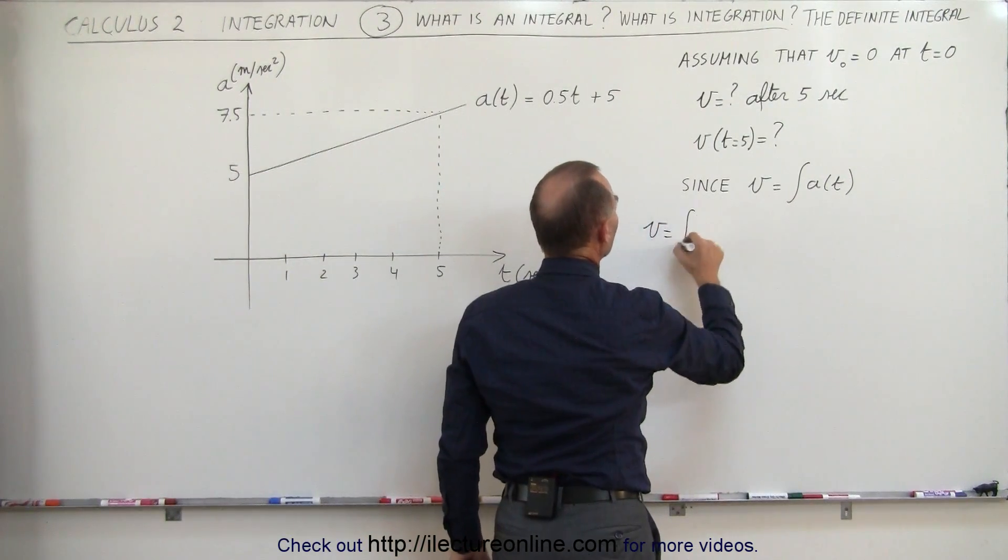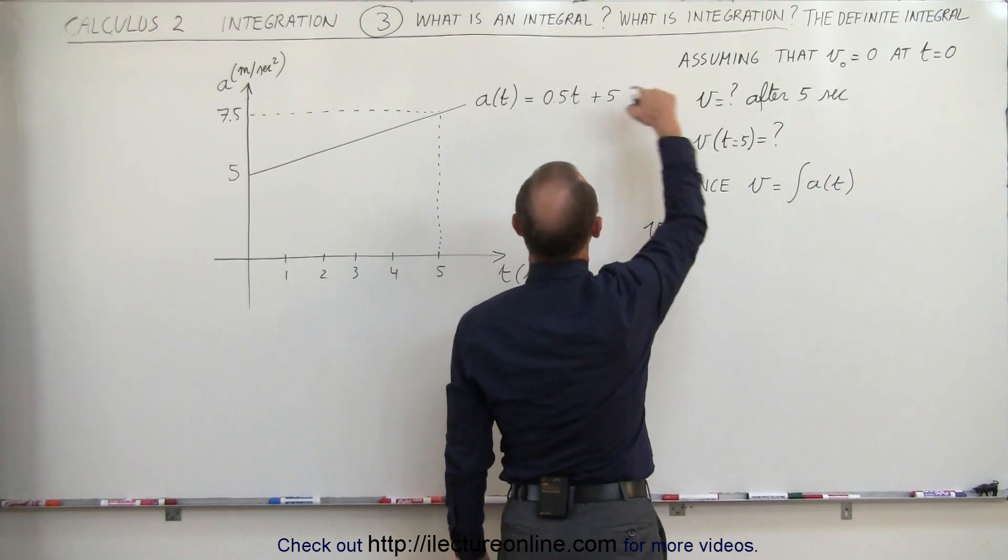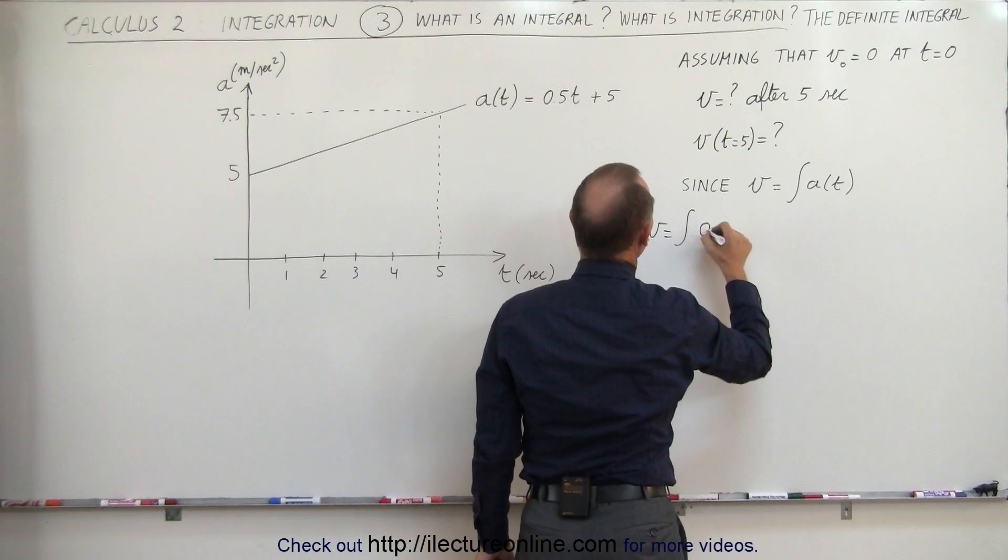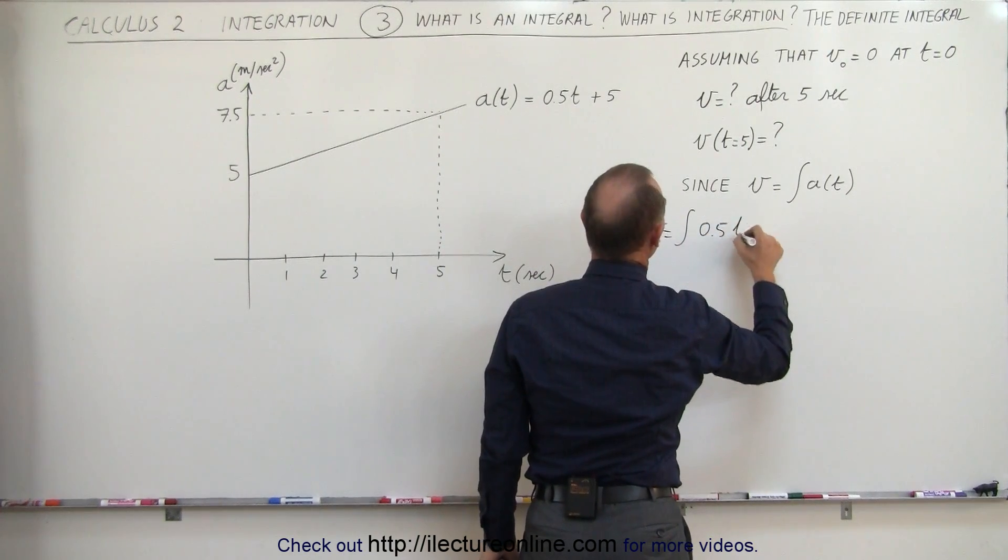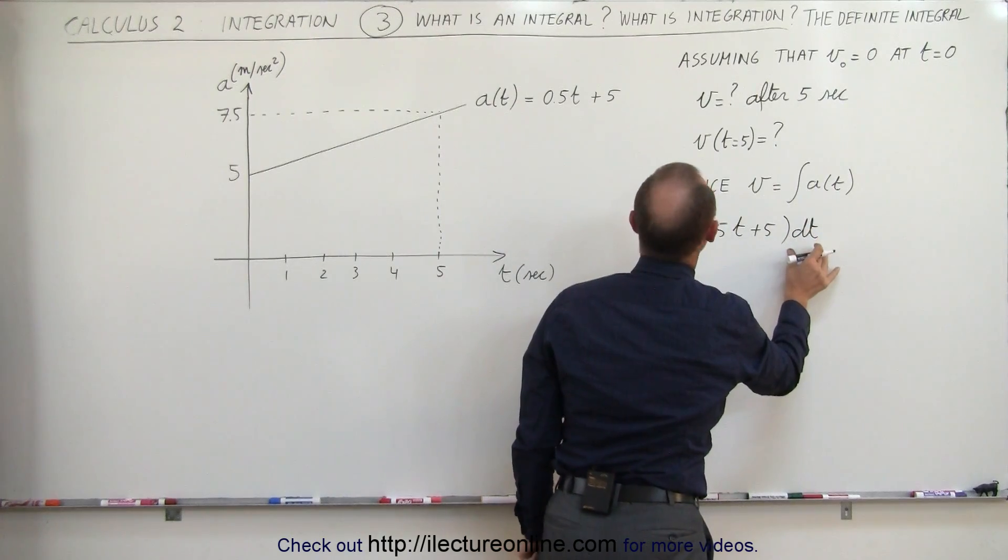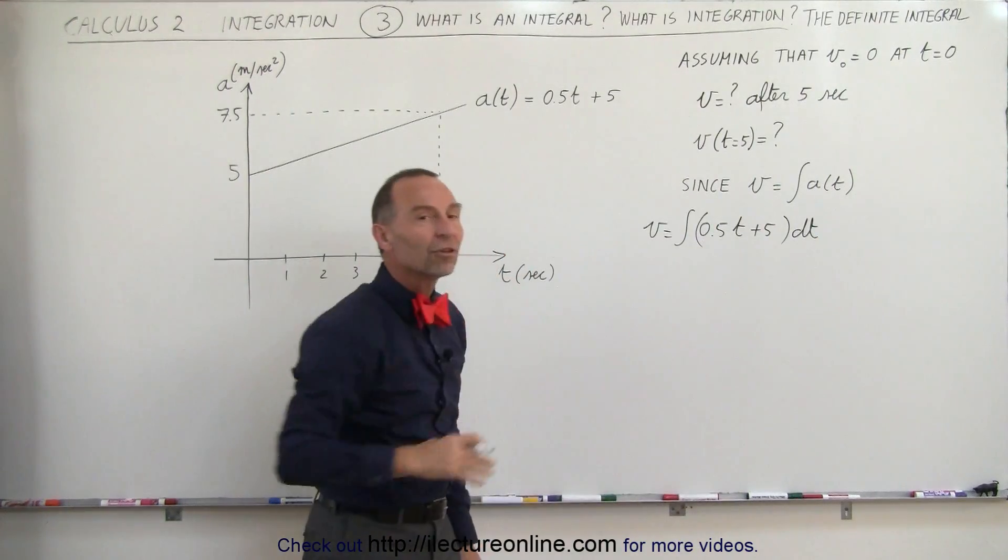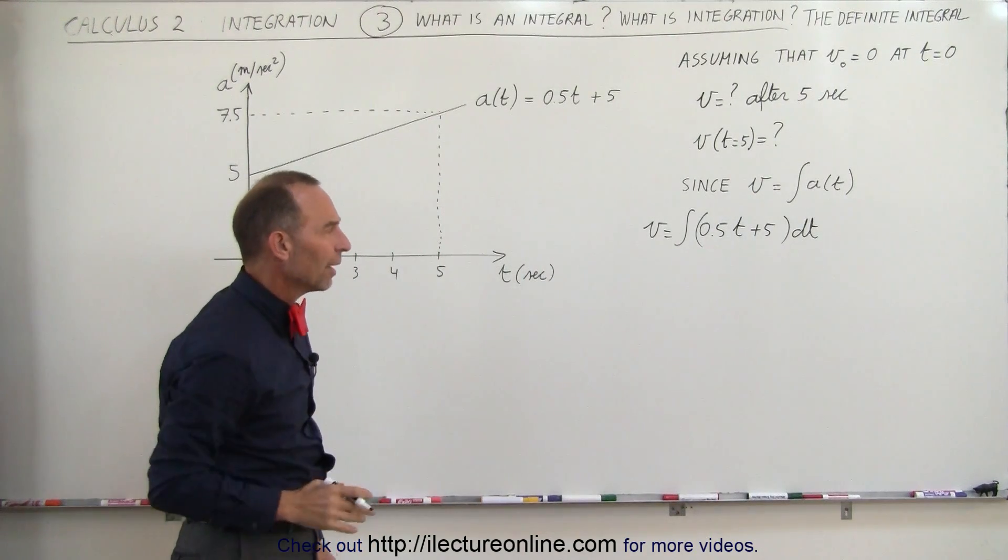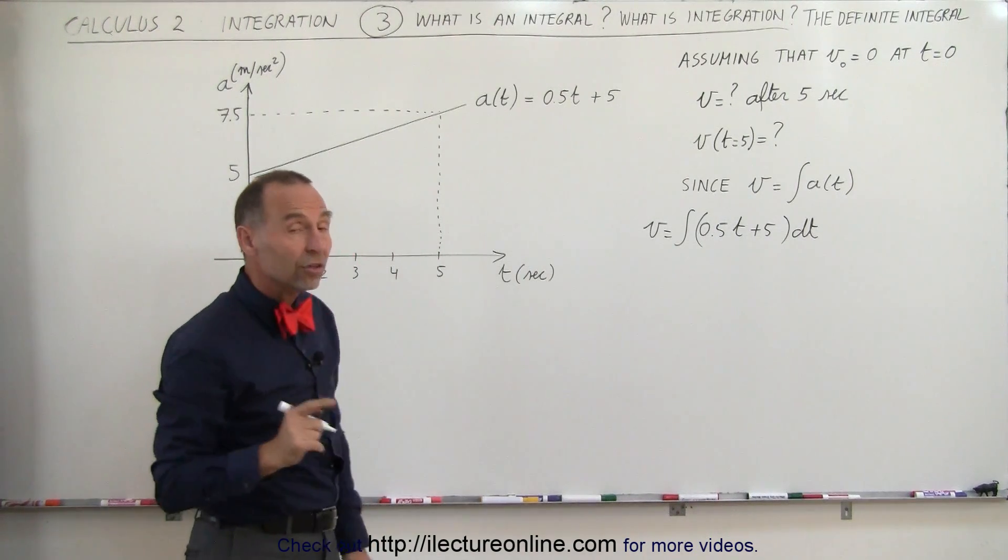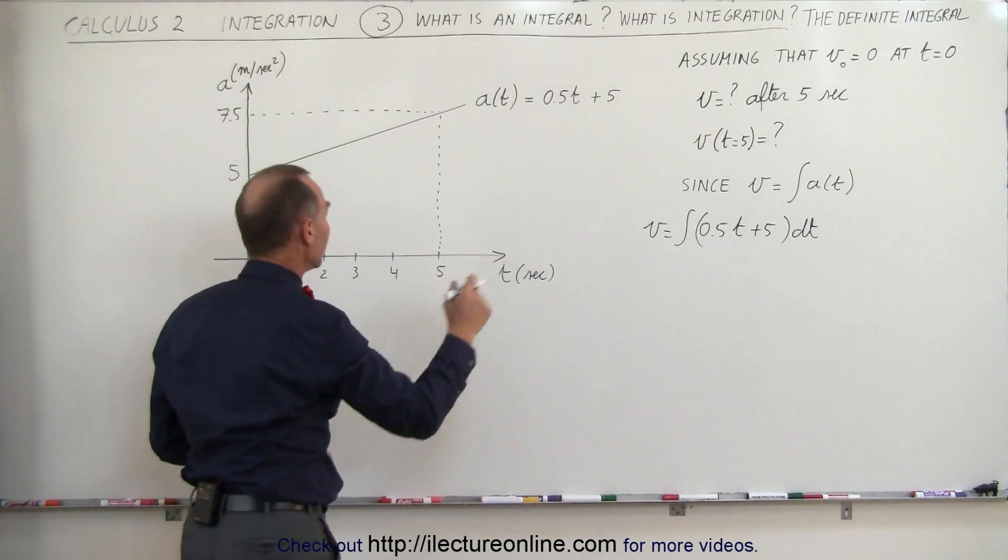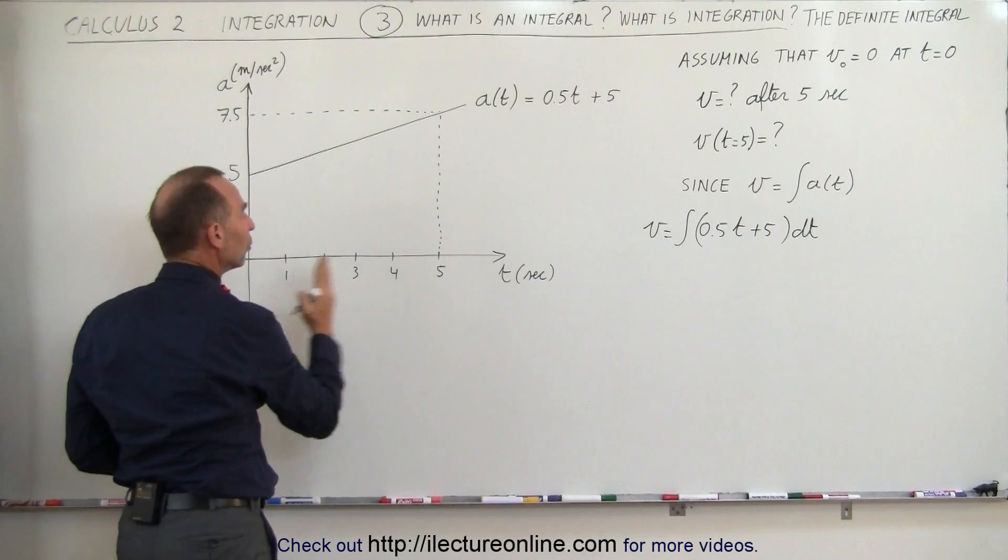So velocity is equal to the integral of the acceleration, and since the acceleration is equal to this equation, we can say that it's the integral of 0.5 times t plus 5 times dt. We always have to have the dt there because it's the opposite of the derivative, and the derivative, that's where the dt comes from, and we'll see later on how that works. Also, this is going to be what we call a definite integral because we're going to evaluate that integral from a starting point to a finishing point.